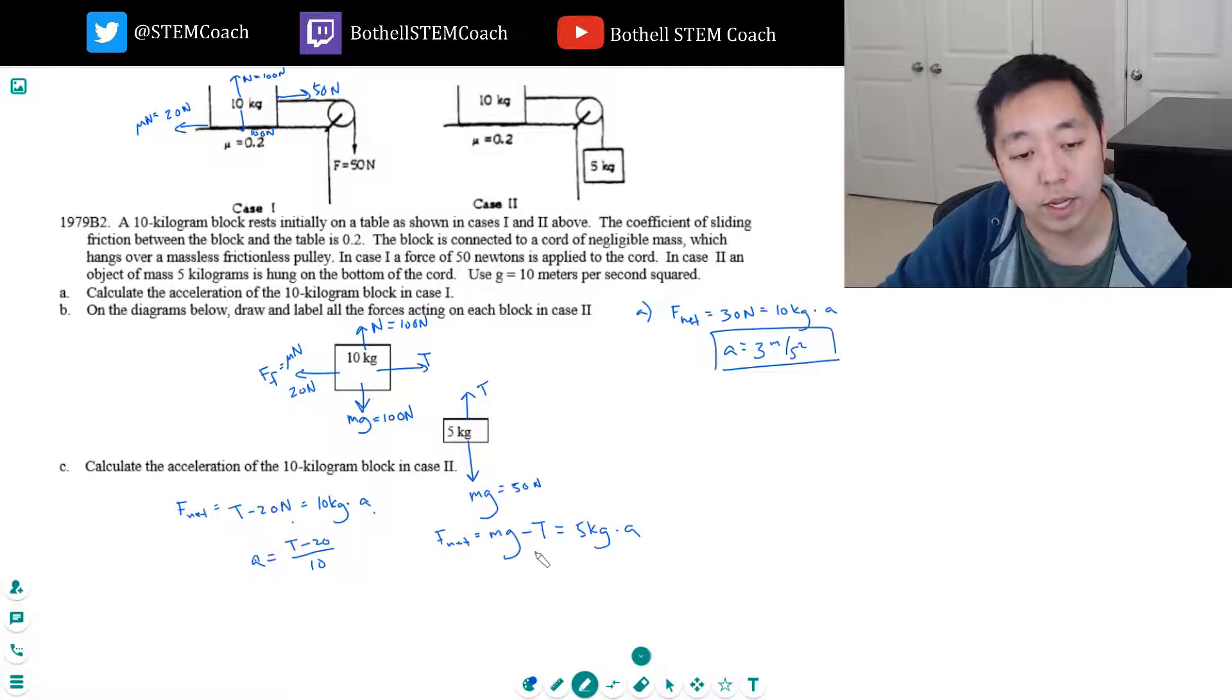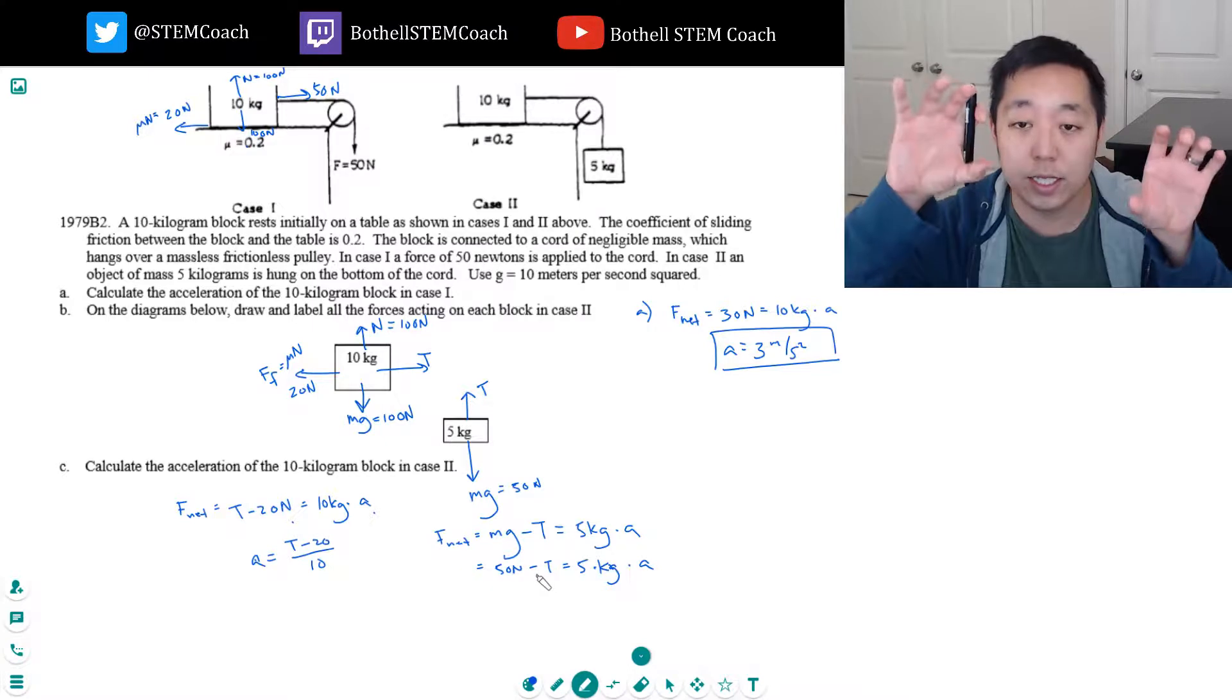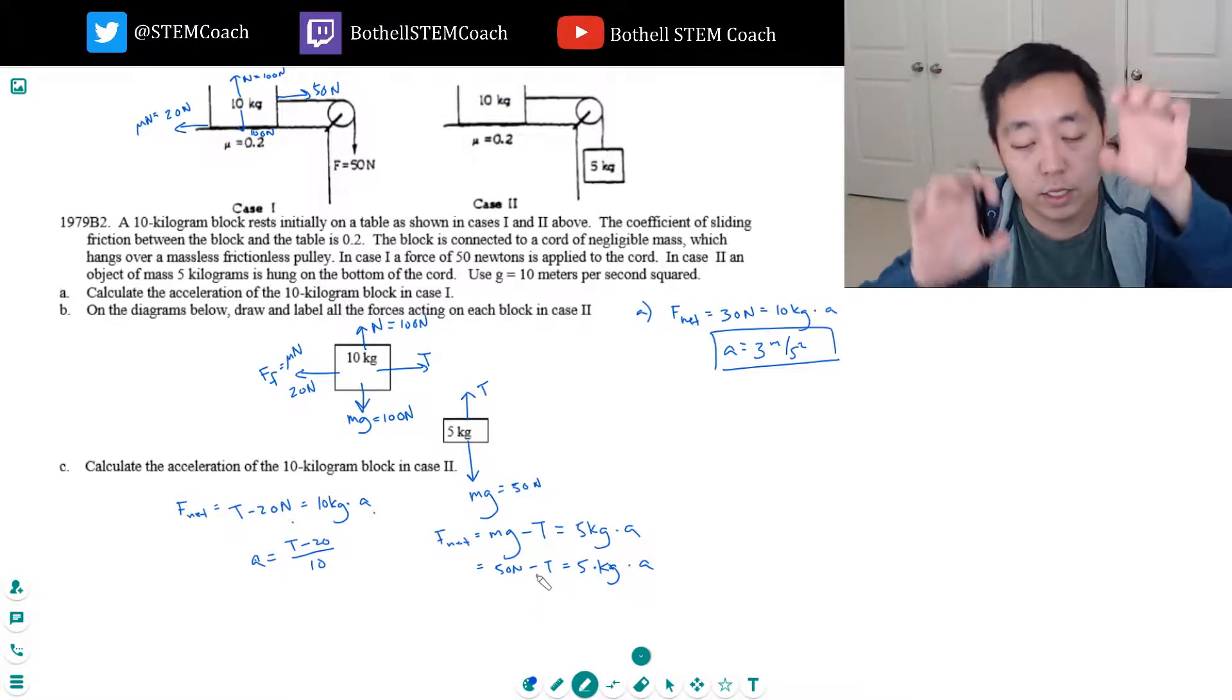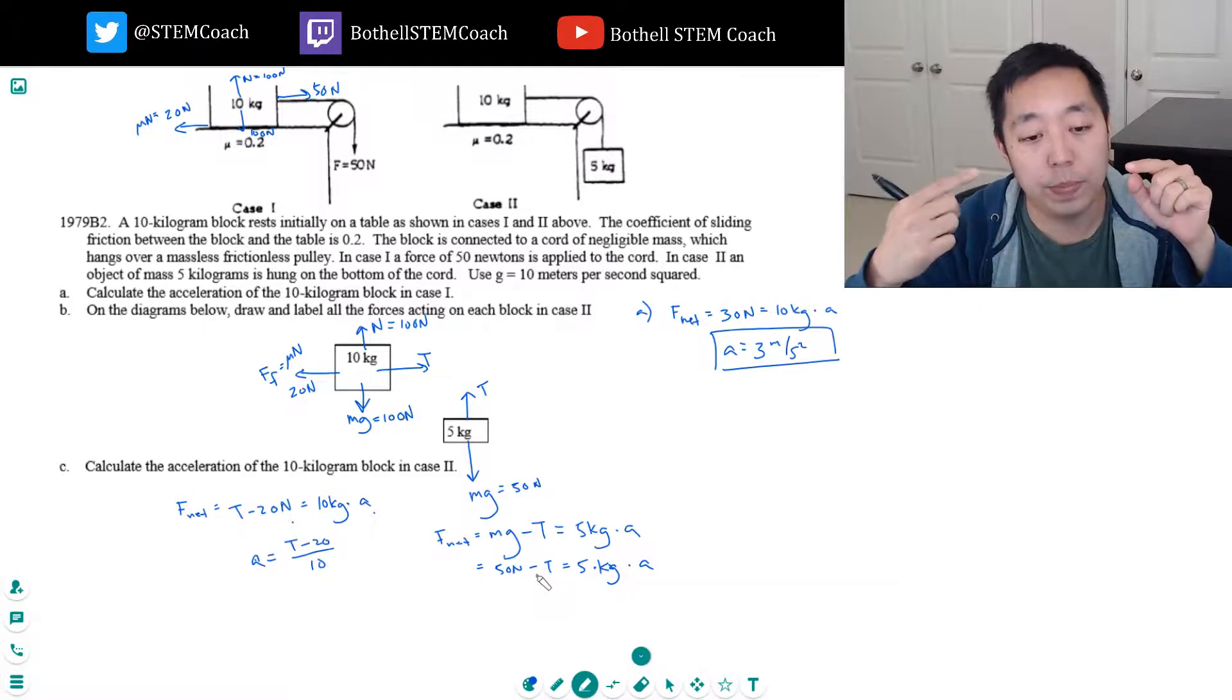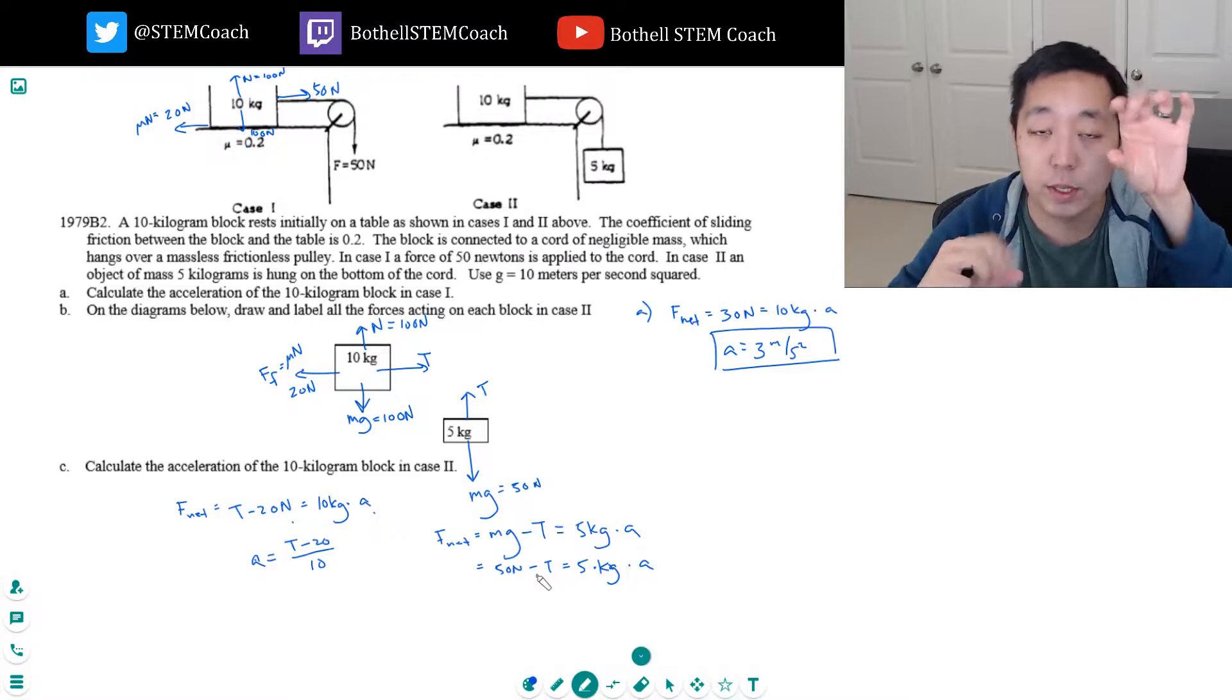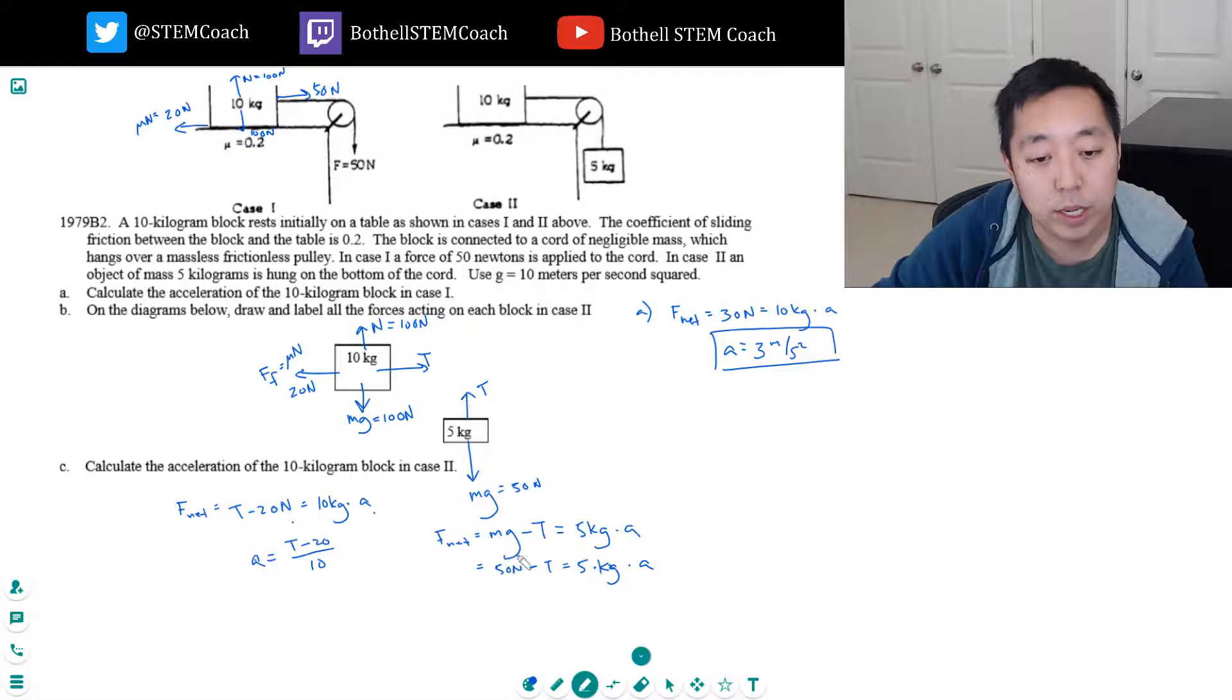Now the problem is, let's do this mg. This is 50 newtons minus t equals 5 kilograms times a. The relationship is these two accelerations have to be the same because these are moving in tandem. The acceleration has to be the same between the two because one can't be moving faster than the other one. Right? The rope would break.